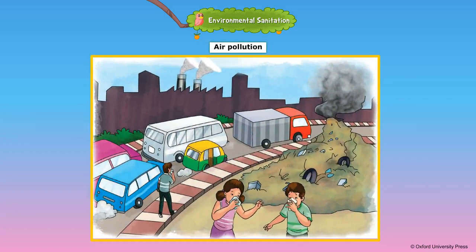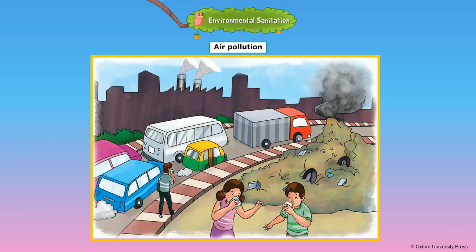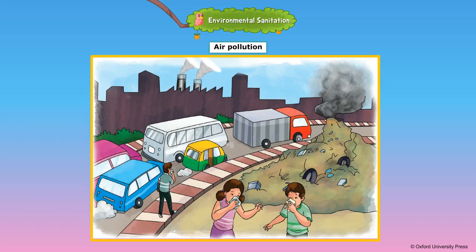Air is polluted due to dirty things known as pollutants, and air polluted by pollutants is known as air pollution. Burning garbage, rubber and plastics especially produces smoke that irritates our nose, throat and lungs. It can also damage plants growing in the area.